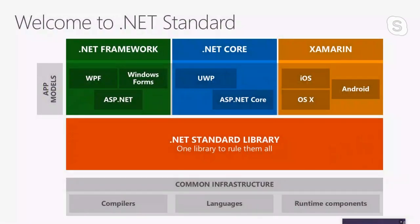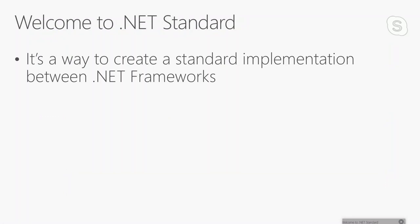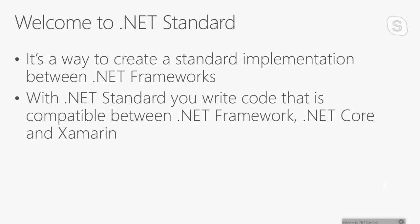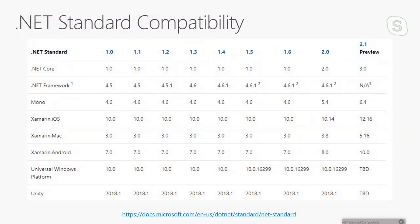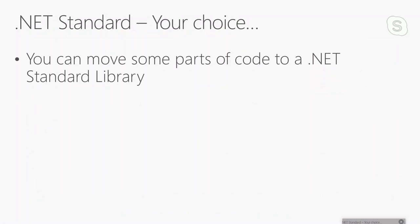But what if you could move some parts of your code to .NET Core? Do you know .NET Standard? .NET Standard is present in all frameworks — it's a way to create a standard implementation between frameworks. This means I can create code that runs on .NET Framework, .NET Core, and Xamarin. I have here a .NET Standard compatibility table: with .NET Standard 2.0, .NET Core 2, and .NET Framework 4.6.1 are all compatible.